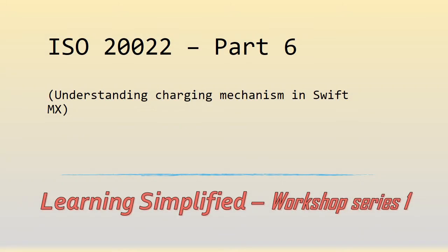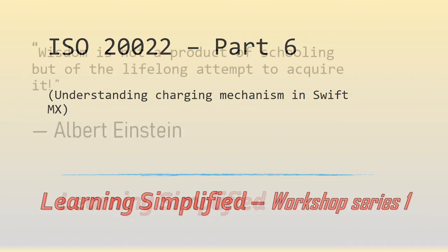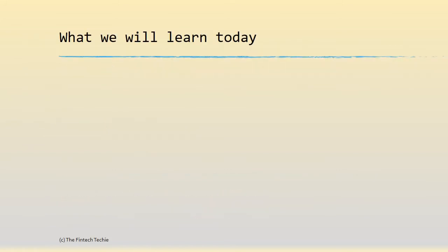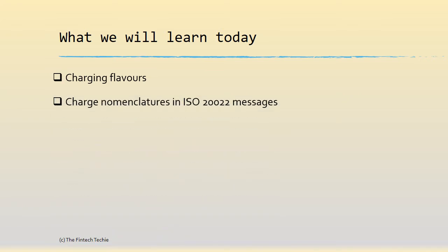Welcome back to part 6 of this series on ISO 20022. In this series, we are going to understand the various charging mechanisms in a SwiftMX message. We are going to learn the following things: first, what are the different charging flavors, especially in the context of a SwiftMT message. We are going to see the similar nomenclatures in an ISO message, wrap it up with an example, and end with an example of a charge claim advice.